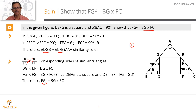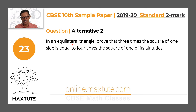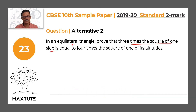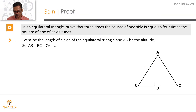Now for Alternative 2, which focuses on equilateral triangles and congruent triangles. In an equilateral triangle, prove that three times the square of one side is equal to four times the square of one of its altitudes. Let each side of the equilateral triangle equal A, and let AD be the altitude from A to BC, which is perpendicular to BC.